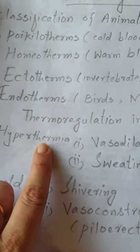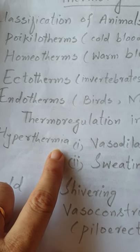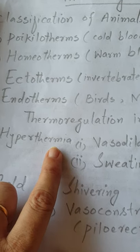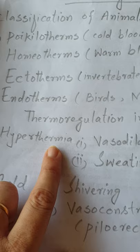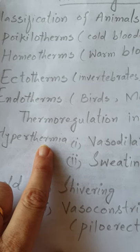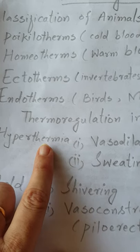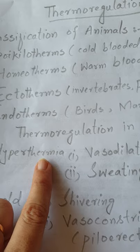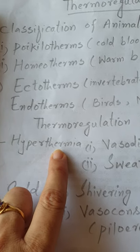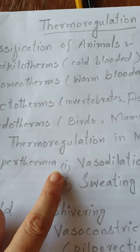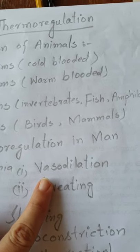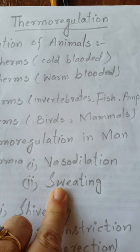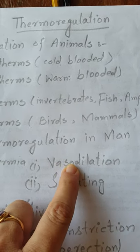Humans have a thermostat in their brain which is known as the hypothalamus. The hypothalamus detects changes in temperature through the blood. When blood flows through it, this sends a signal to the hypothalamus indicating whether the temperature is high or low. When there is high temperature, the hypothalamus brings about two changes inside the body.